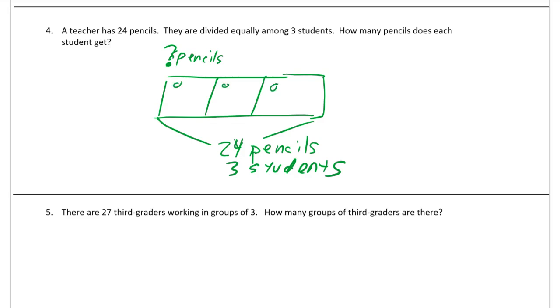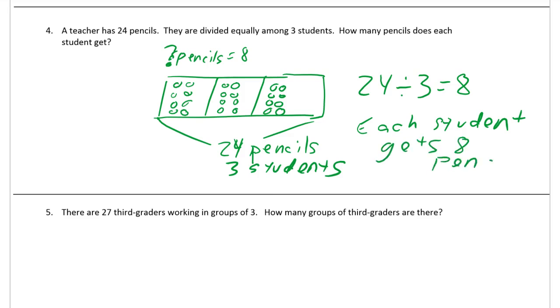So, 24 pencils: 1, 2, 3, 4, 5, 6, 7, 8, 9, 10, 11, 12, 13, 14, 15, 16, 17, 18, 19, 20, 21, 22, 23, 24. And so now we found out that there are 8 pencils for each student. We take the 24, divide it into 3, and we got 8 pencils for each student. Each student gets 8 pencils.